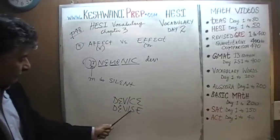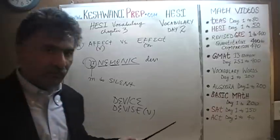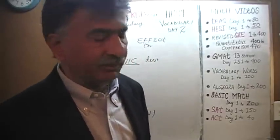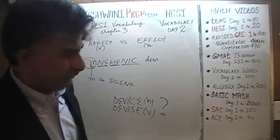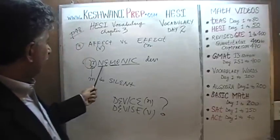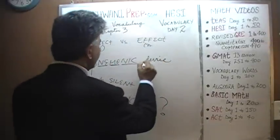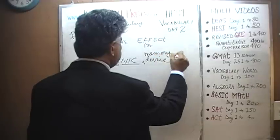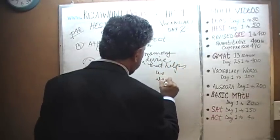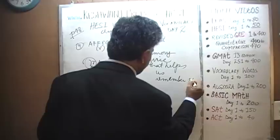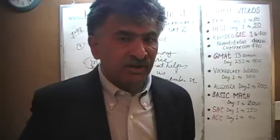Device and devise — I think 'devise' is the verb: to devise something, meaning to find a way of doing something, usually crafty. 'Device,' I believe, is a noun. Mnemonic is a device — that would be the noun. Mnemonic is a memory device. It is a memory device that helps us remember something.